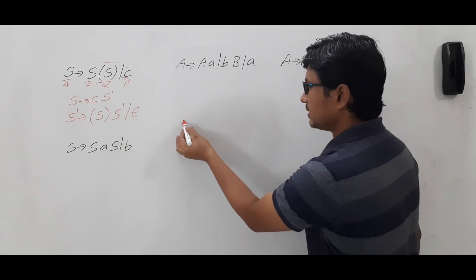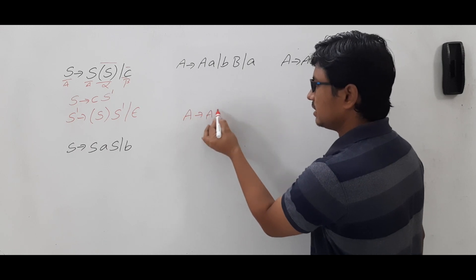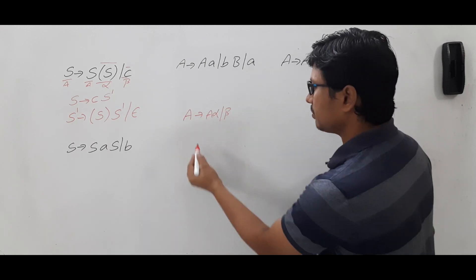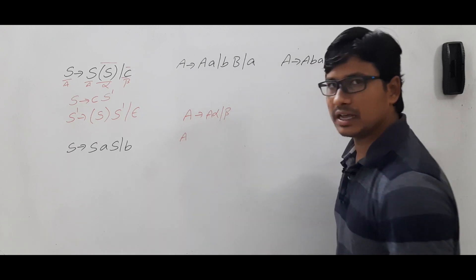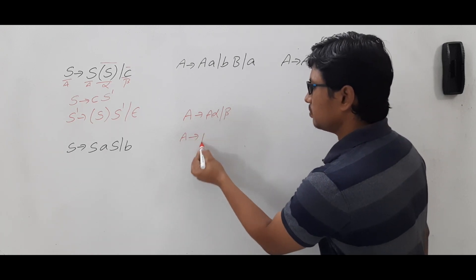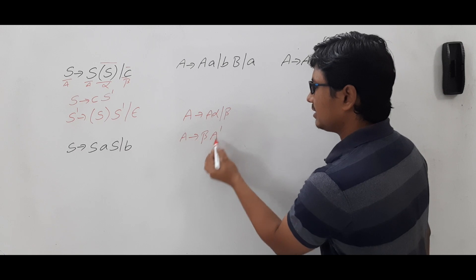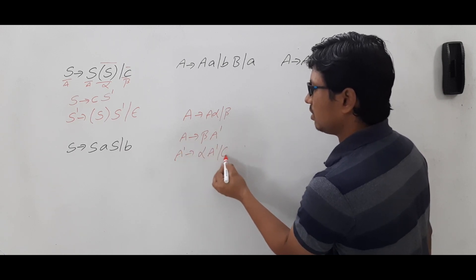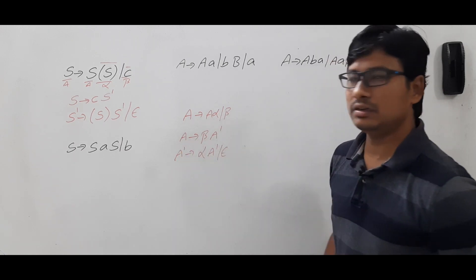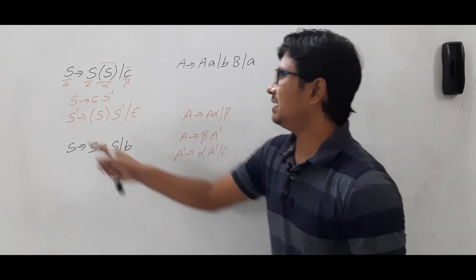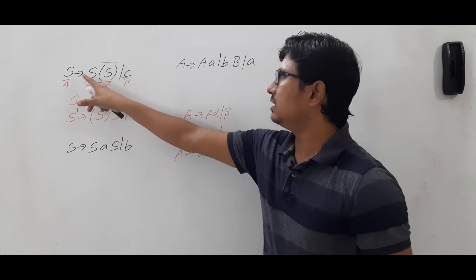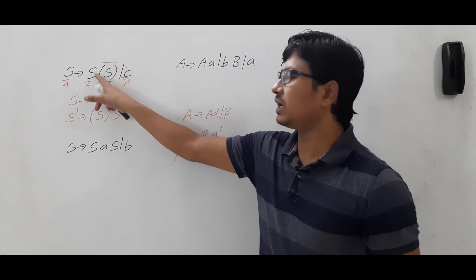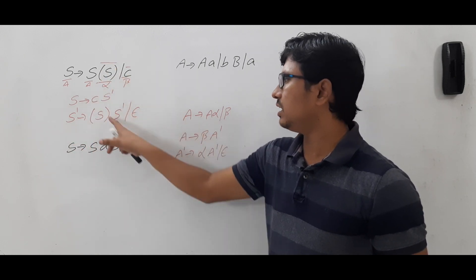If you have a doubt, let me clarify: A → Aα | β can be converted into right recursion grammar as A → βA′, A′ → αA′ | ε. So the same way, S → cS′, and S′ → {S}S′ | ε. I have considered this entire part as alpha.